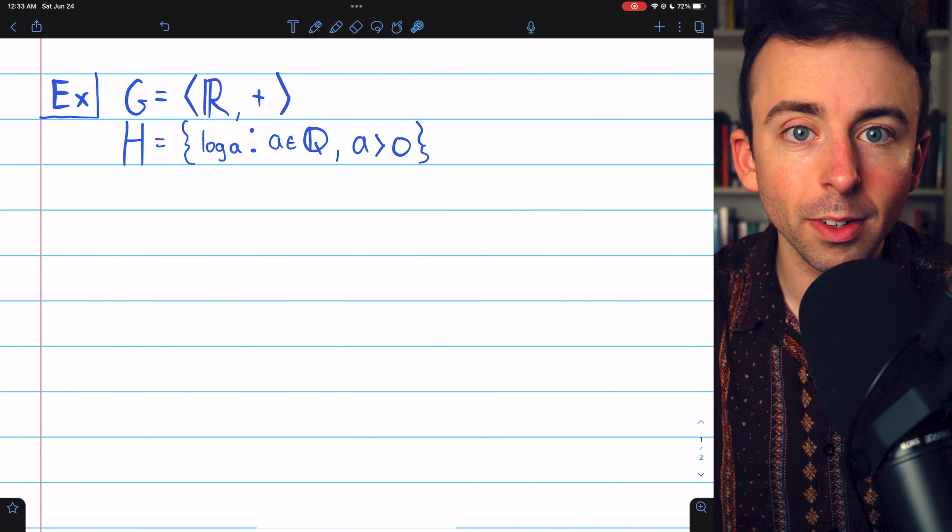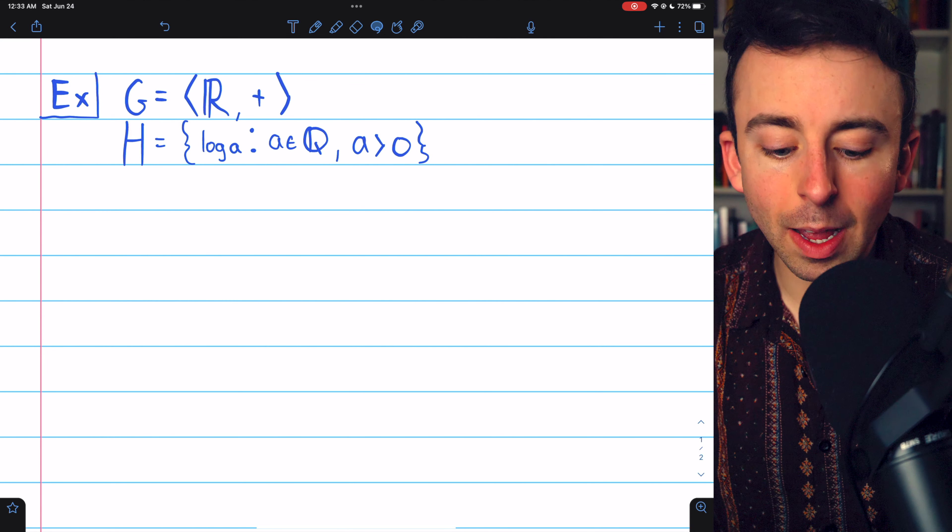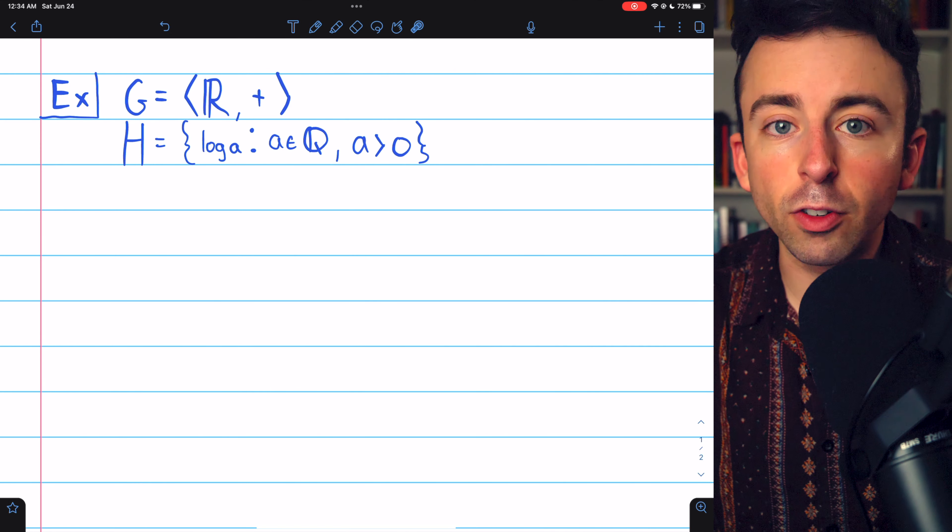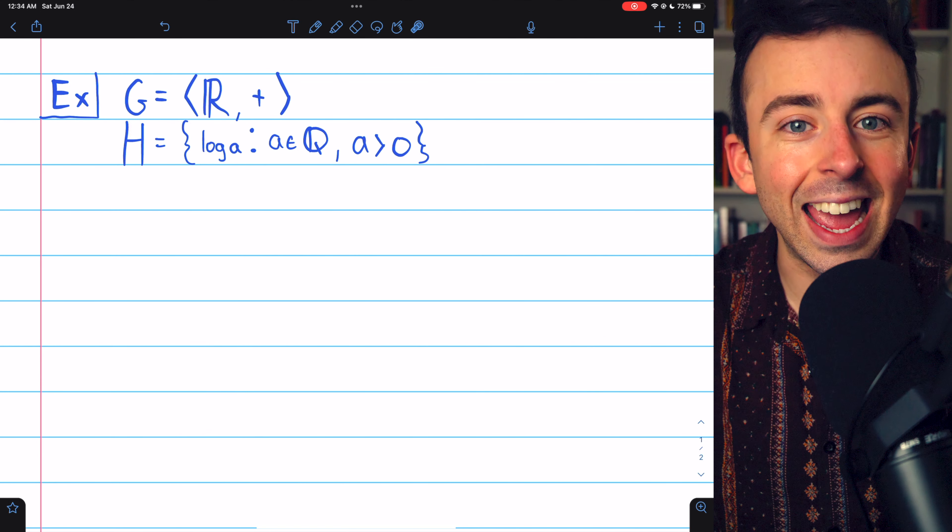They're also real numbers. Thus, we can apply the two-step subgroup test to show that H is a subgroup of G. We just need to show that H is closed with respect to products and inverses.